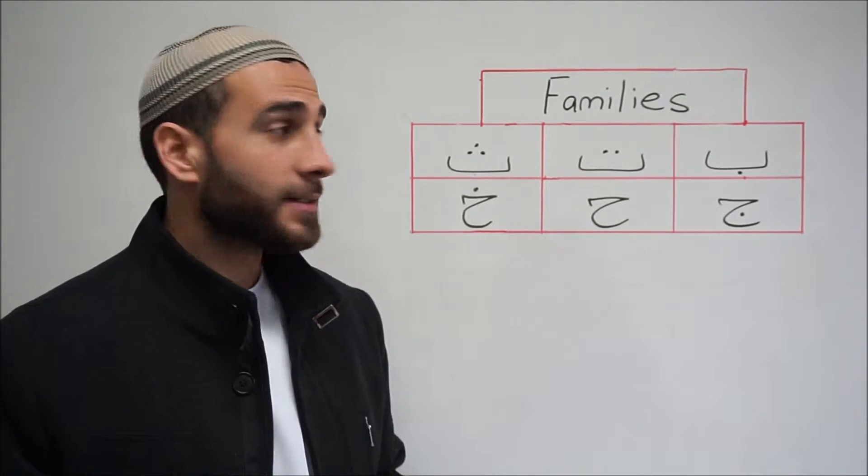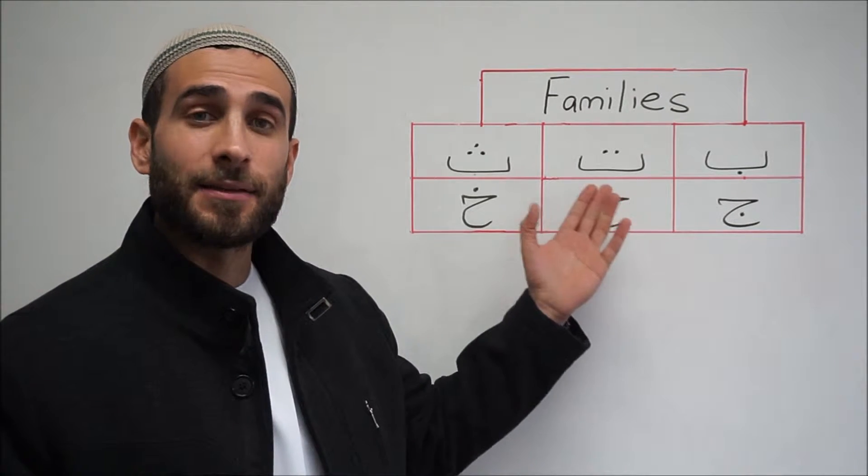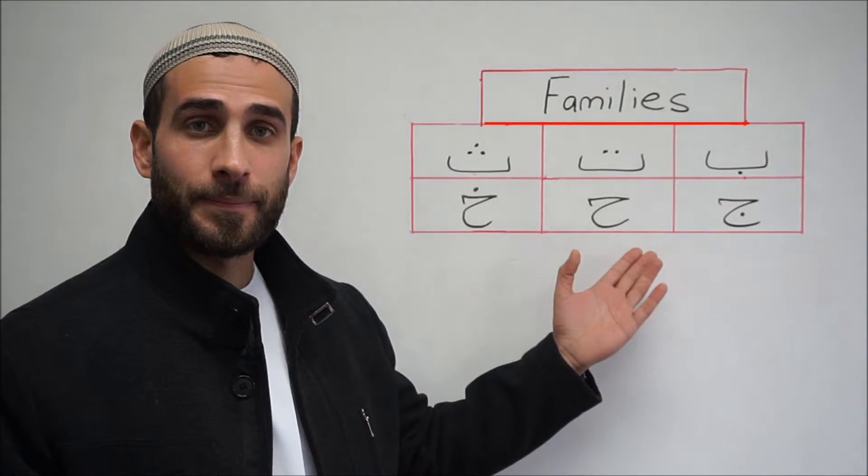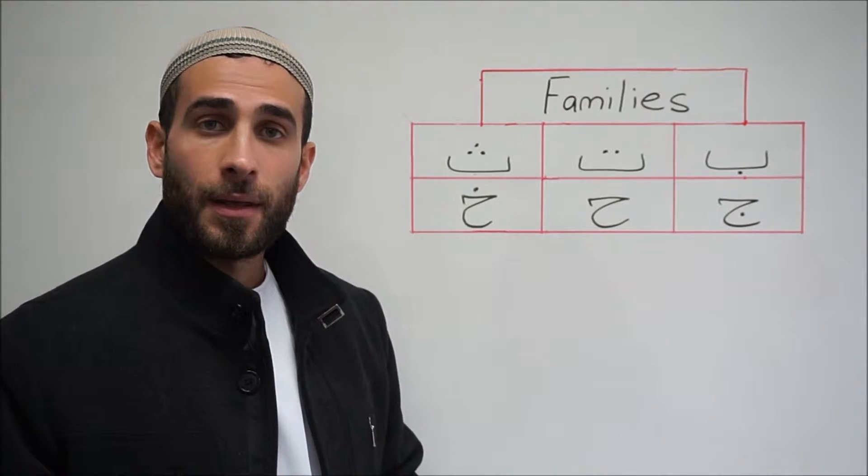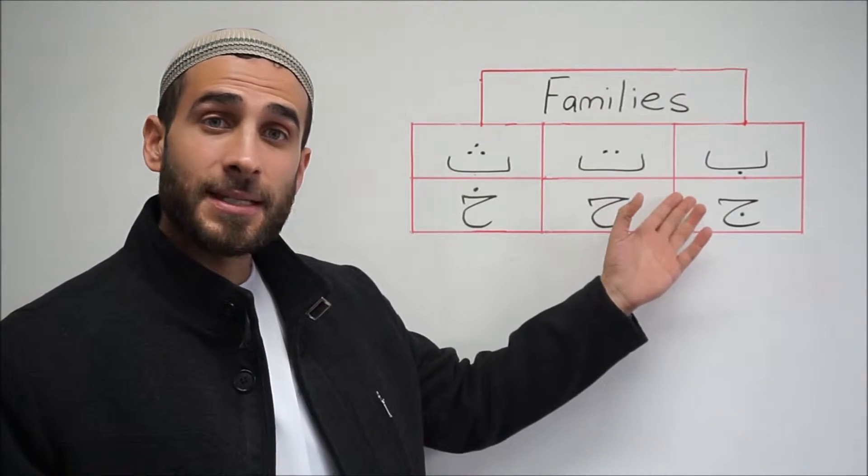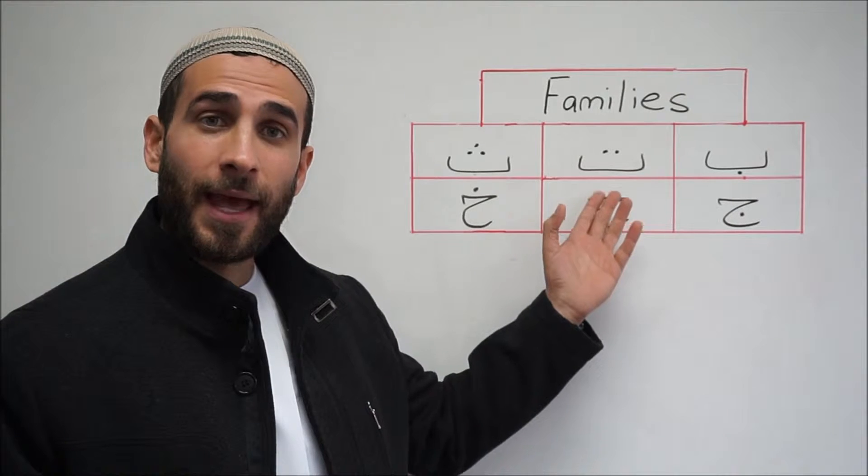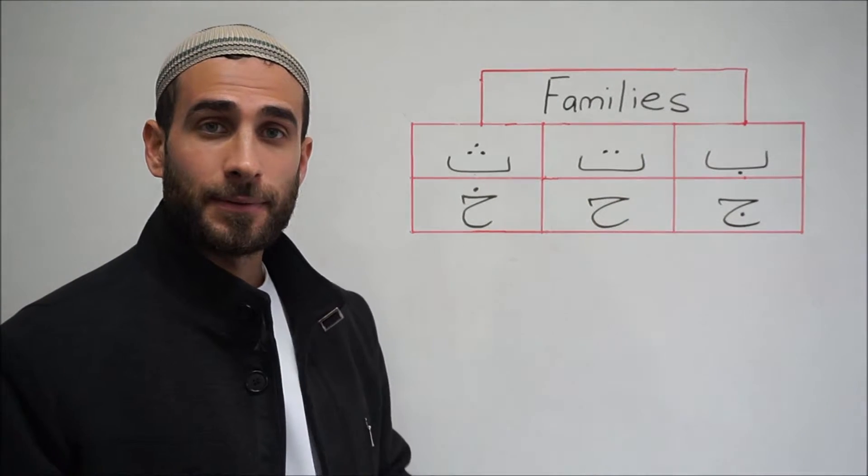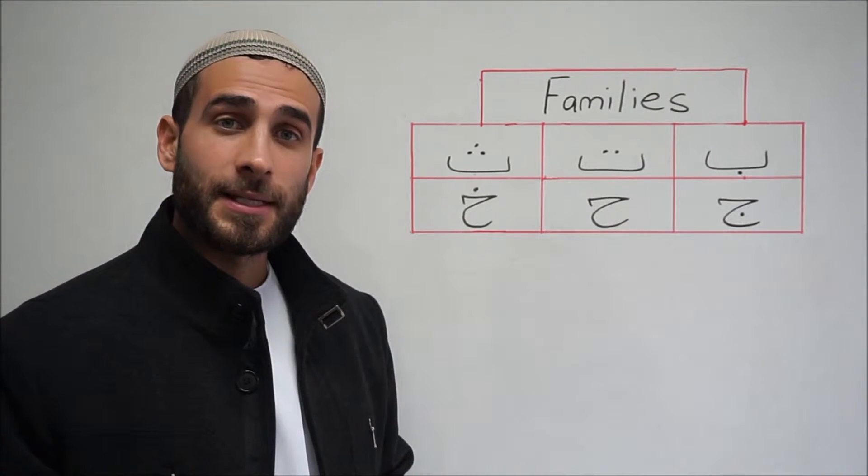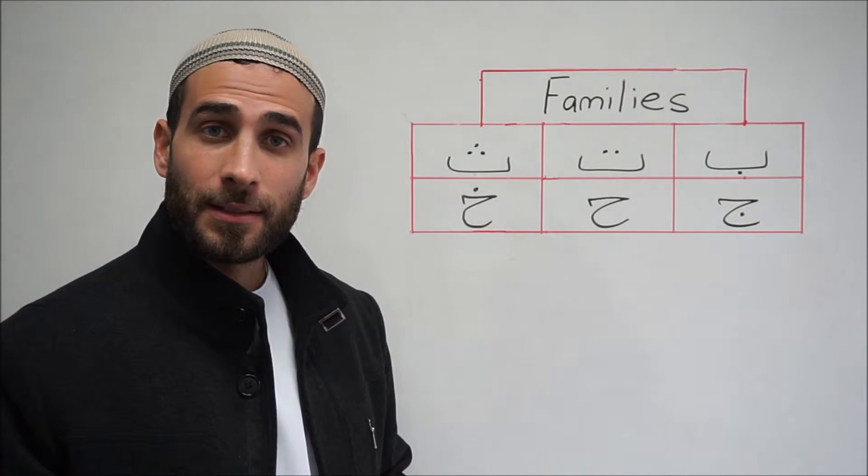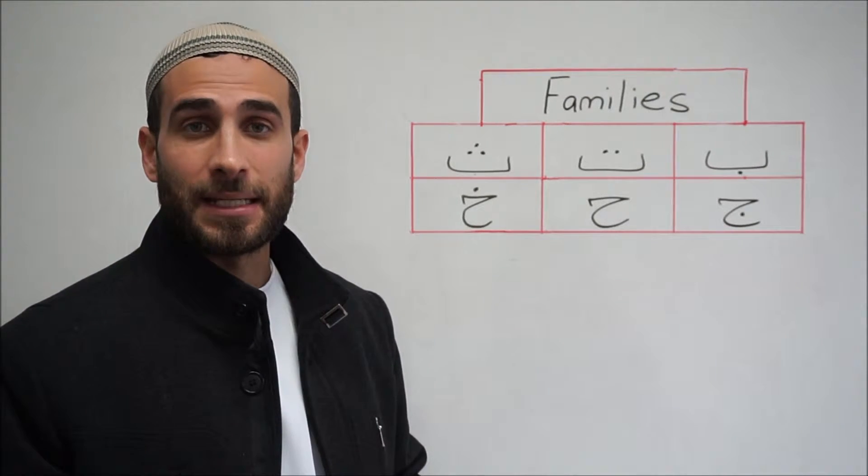The following letters are grouped into families. The letters in each family have the exact same shape. The only difference is how many dots and where these dots sit.